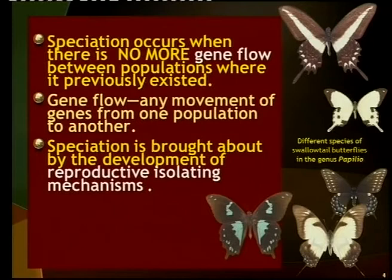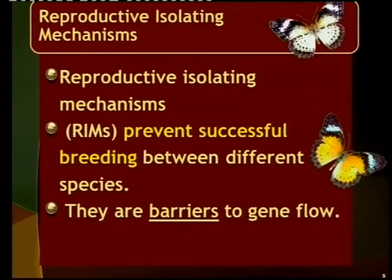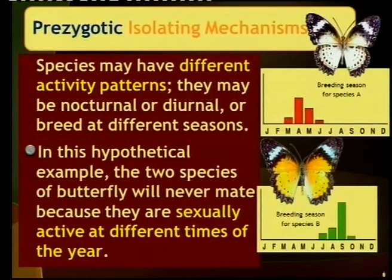What brings about speciation? We look at reproductive isolating mechanisms — a long term, shortened to RIMs, but you must first write out the full name: reproductive isolating mechanisms. These are the things that prevent interbreeding — the barriers that cause prevention of gene flow.